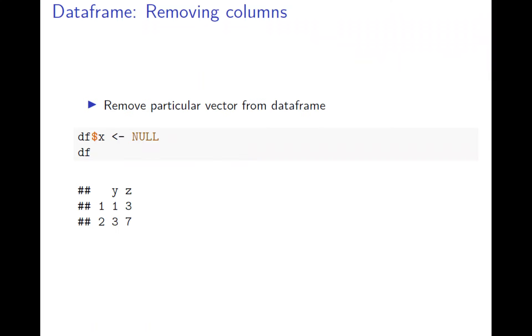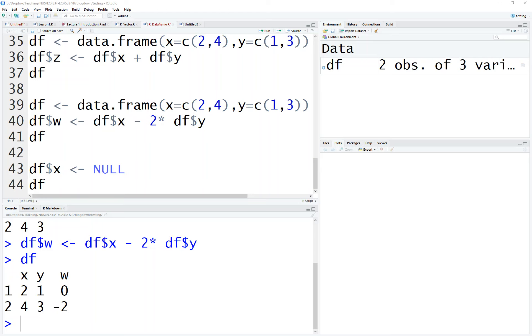Finally, let's talk about removing a particular vector. You just set it to NULL, and it's gone. You delete it by setting it to NULL. Let's see. If I set x to NULL, there were three variables. When I do it, it becomes two variables.